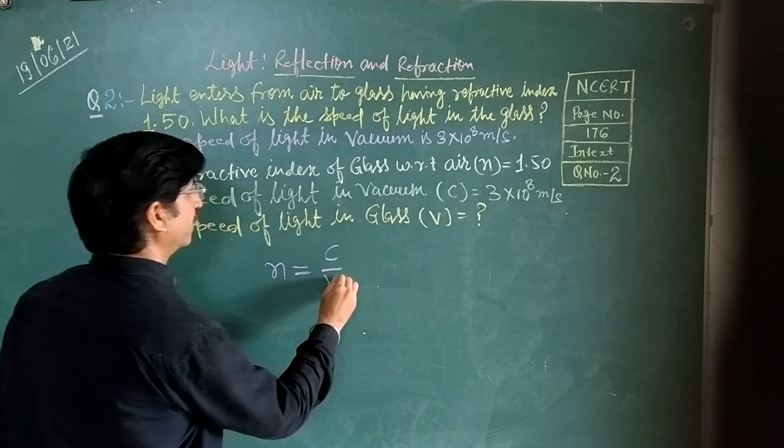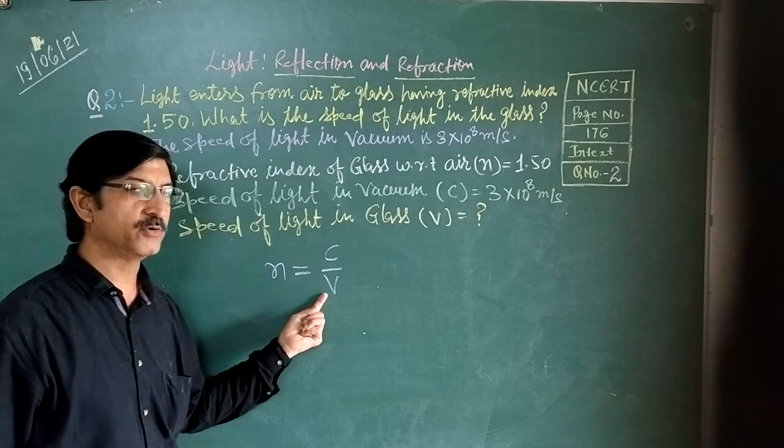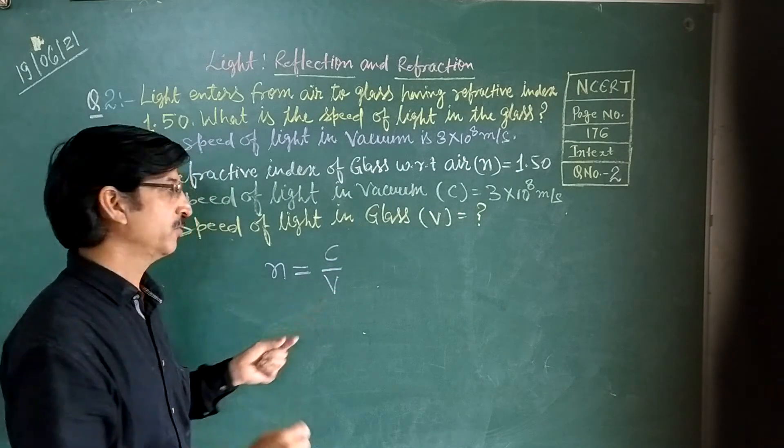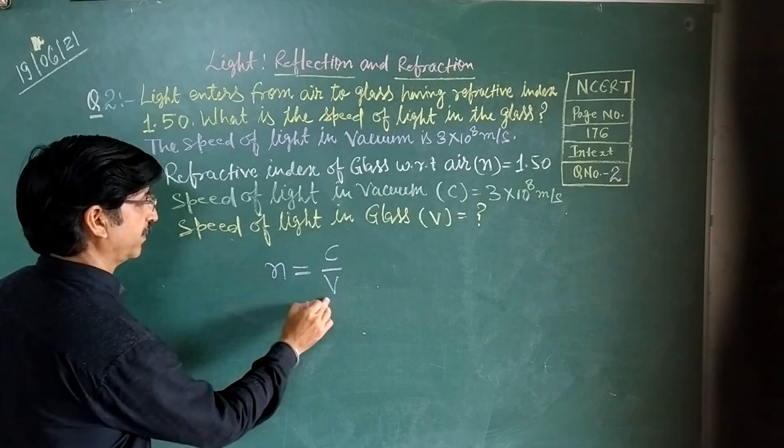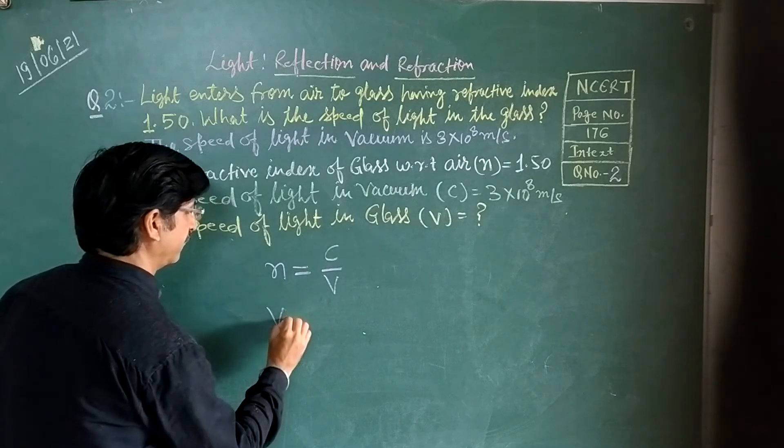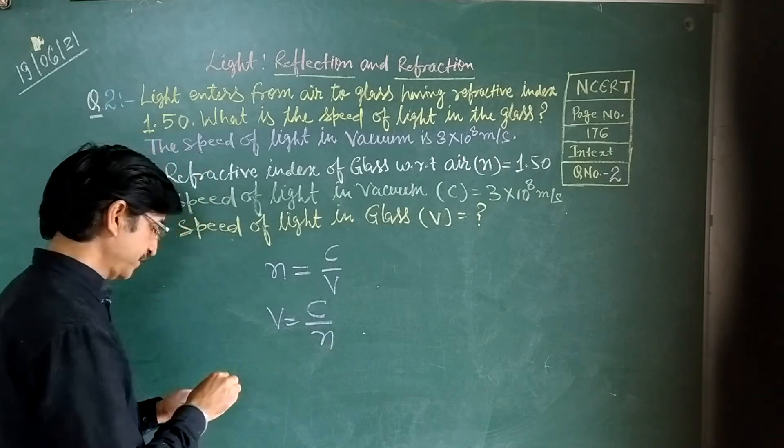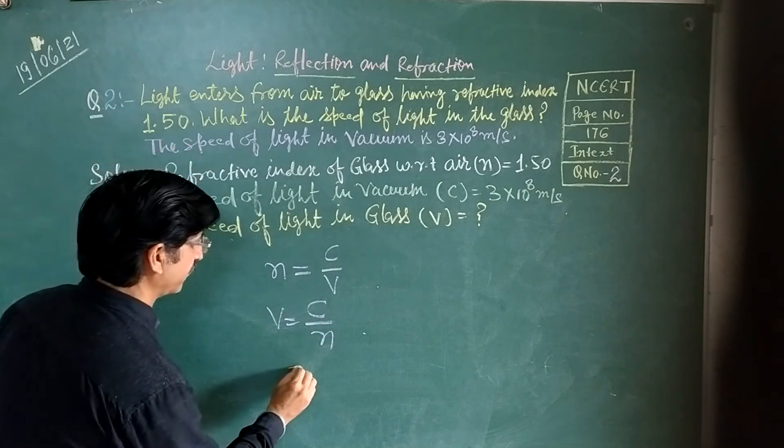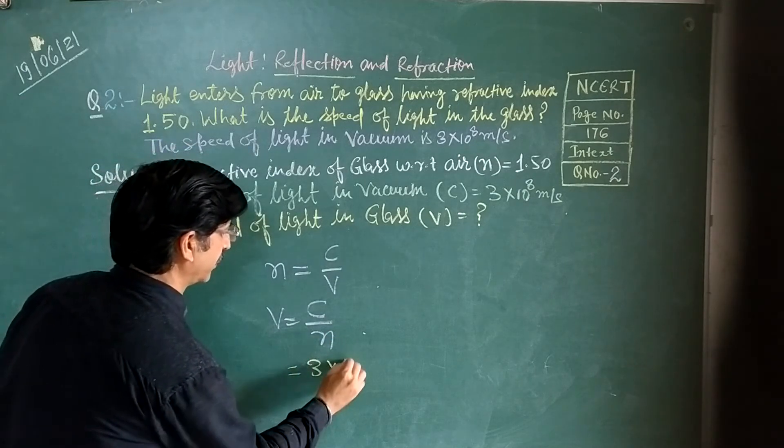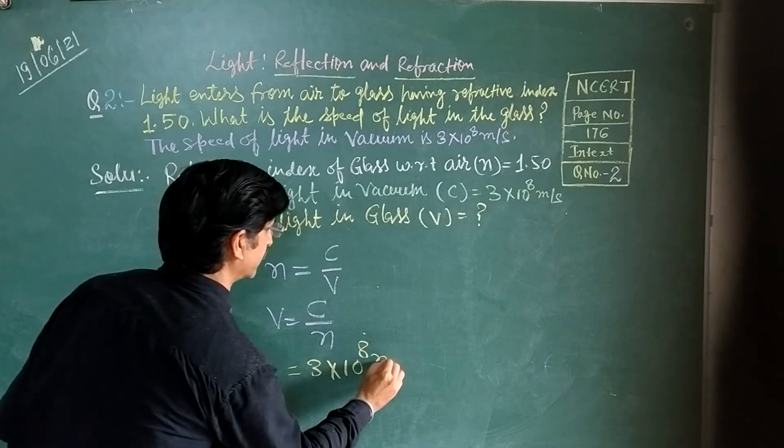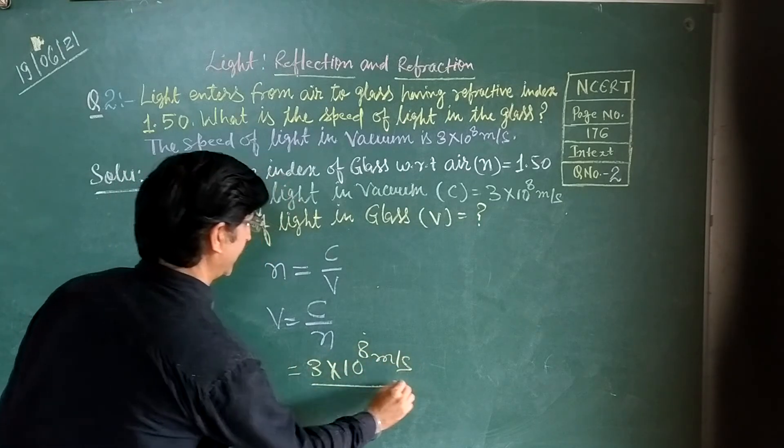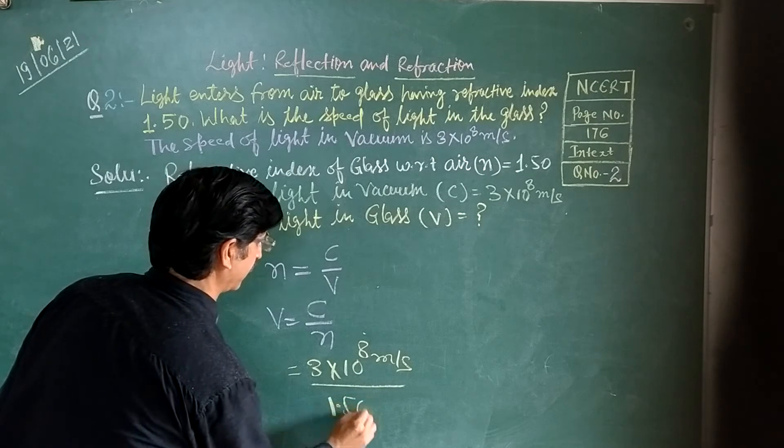From n is equal to c upon v, we derive v is equal to c upon n. Now we have the value of c as 3×10^8 meters per second and n is 1.50.